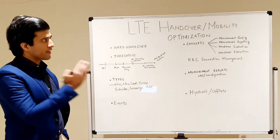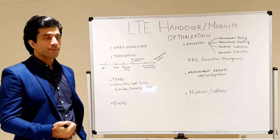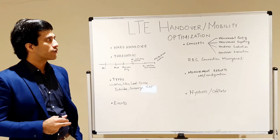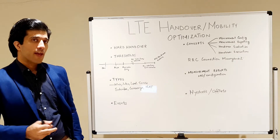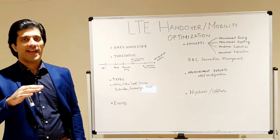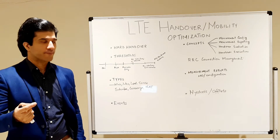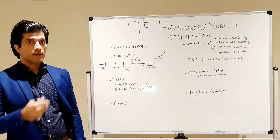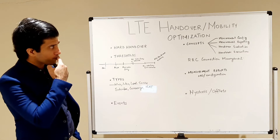The basic concept of handovers consists of four steps: measurement configuration, measurement reporting, handover evaluation, and handover execution. A key aspect of LTE is that measurement reporting can be configured based on certain events. As the UE's RSRP or RSRQ goes through different levels and crosses different thresholds, certain measurement reports are triggered. Measurement configuration is basically how you configure those thresholds, and measurement reporting defines what is reported when those thresholds are crossed.